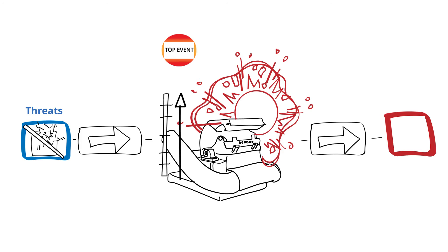If the top event occurs, then there are consequences. This is the right-hand side of the bowtie. We look at all the potential consequences if the top event were to occur. This could be damage to workers, environment, equipment, or processes.